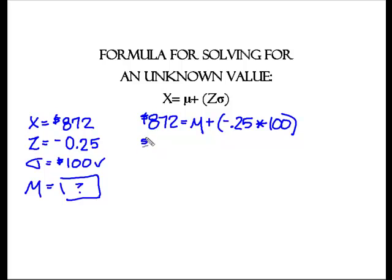And I am going to then say 872 is equal to the mean, in this case now, minus $25. So, I am going to add my 872 plus my 25 and I am going to end up with $897 as the value of the mean of that distribution.